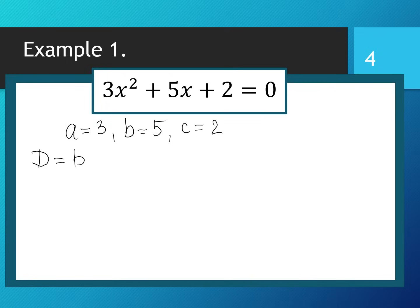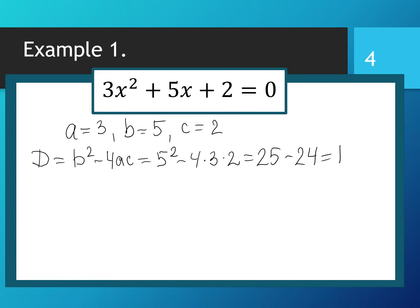The discriminant equals b² - 4ac. Using our coefficients, it would be 5² - 4 × 3 × 2, which is 25 - 24 = 1. Now we can see the discriminant is positive, greater than 0.